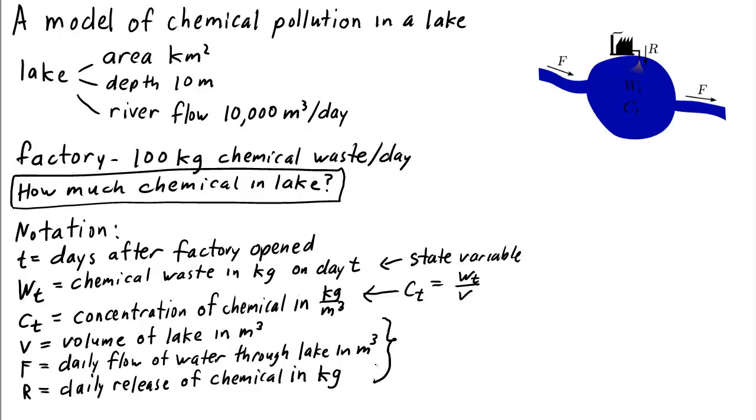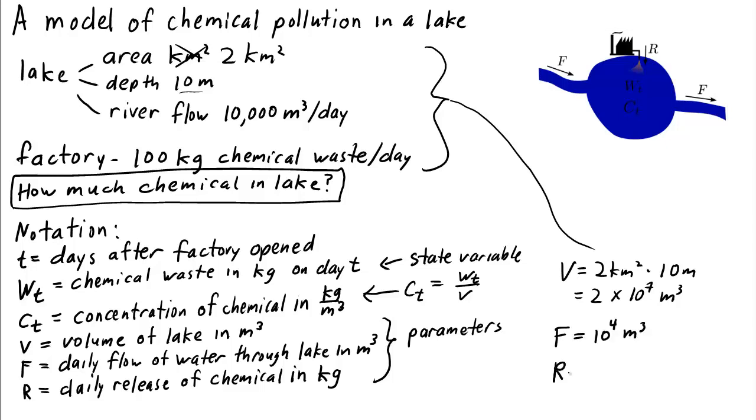v, f, and r are parameters of our system. Given the information about the lake and the factory, we know exactly what the value of the parameters must be. Since the area is 2 square kilometers and the depth is 10 meters, the volume is 2 times 10 to the power of 7 cubic meters. The flow is 10,000 cubic meters per day, and the daily release is 100 kilograms.